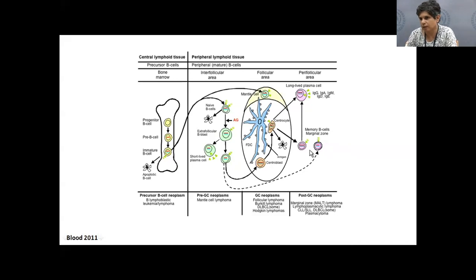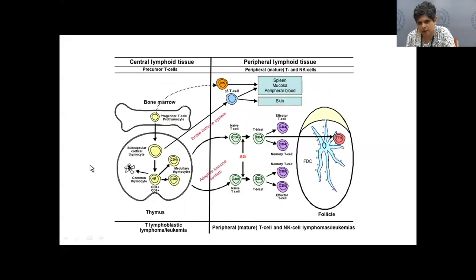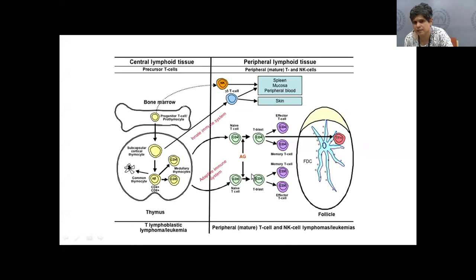For T-cells, the classification is similar — arising in the marrow and thymus giving T-cell leukemia-lymphomas. When T-cells enter the peripheral blood as gamma-delta T-cells, NK cells, or CD4/CD8 positive cells, they form T-cell lymphomas in the blood, node, or extranodal sites. A key difference from B-cells is that T-cell lymphomas have many extranodal presentation sites.